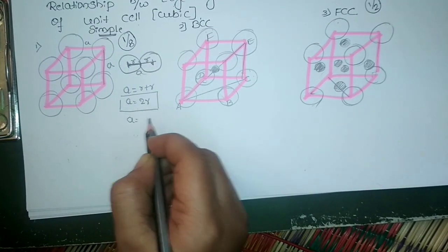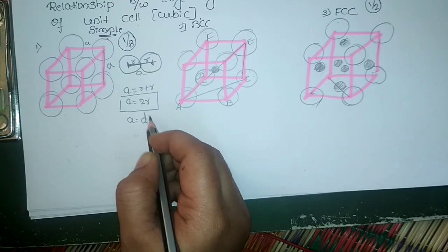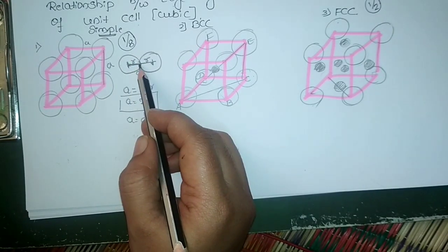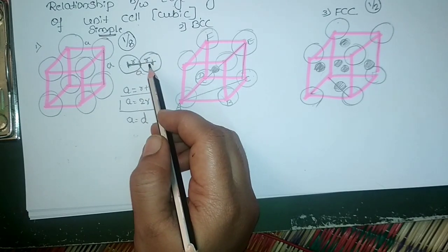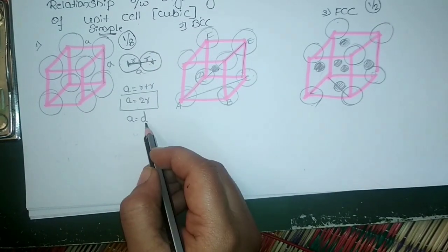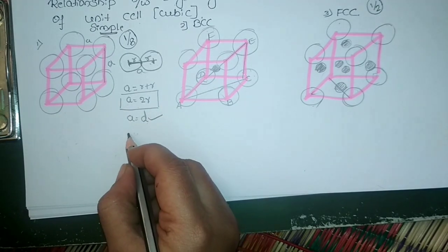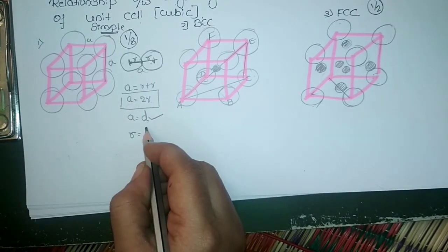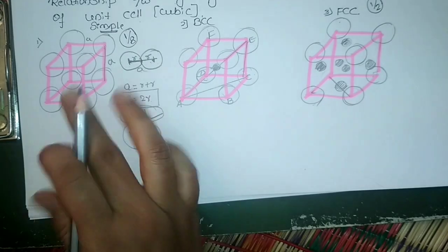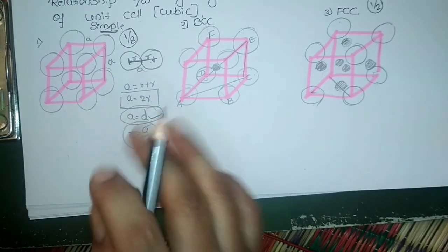We can also write this as A = D, where D is the diameter, since diameter equals twice the radius. From one end to the other, we get half the diameter from each atom, totaling one full diameter. So the three key relations for the simple cubic unit cell are: A = 2R, A = D, and R = A/2. These are very important to remember.